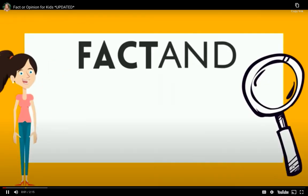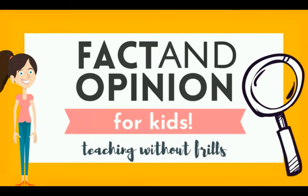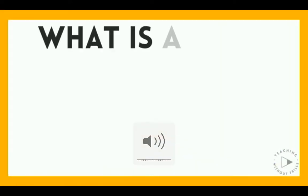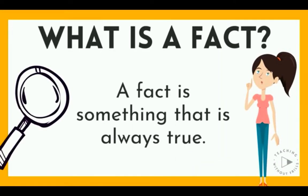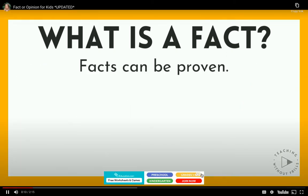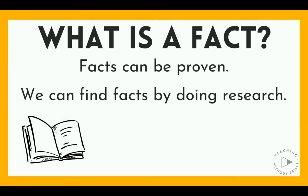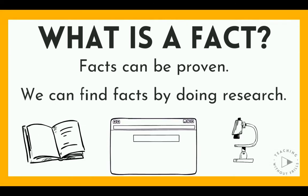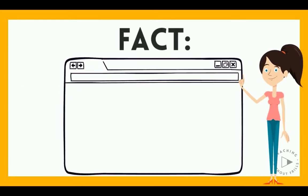Fact and Opinion for Kids by Teaching Without Frills. What is a fact? A fact is something that is always true. Facts can be proven. We can find facts by doing research in books or on the internet, or we can even do research of our own. Here's an example of a fact.